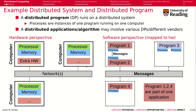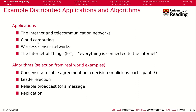Similarly, we could have a hardware environment with different computer systems produced by different vendors. Let me show a couple of further examples of applications. The internet is a great example of a distributed system. Telecommunication networks as well. We have cloud computing, which we'll talk about later. We also have wireless sensor networks and the internet of things — IoT — which means everything is connected to the internet: your fridge, printer, car, connecting everything together.